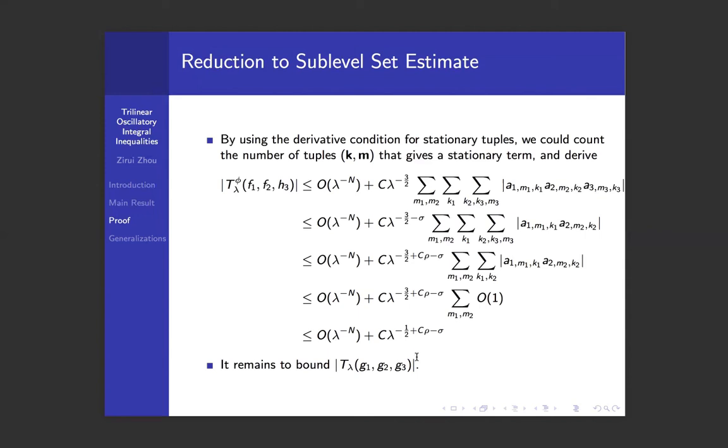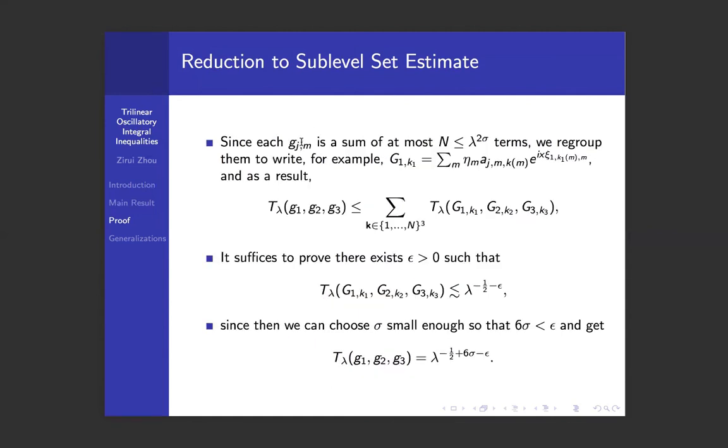Okay, now it remains to bound T_λ of the g function. There's no good estimate on the Fourier coefficients in g. However, since the number of terms in g_{jm} is nicely bounded by λ^(2σ), we can break each g_j as a summation of big G functions.